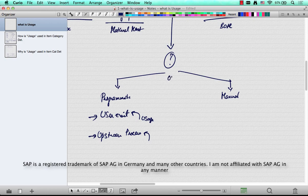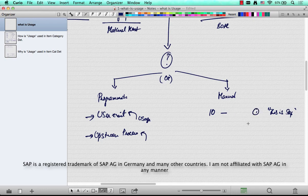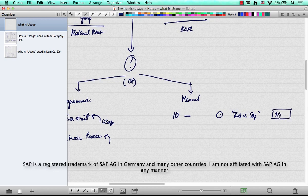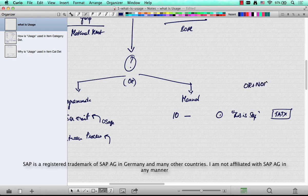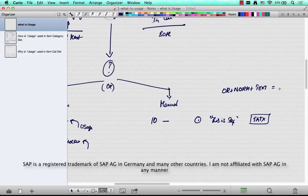Or you can use it manually. For example, if you create an order of type OR and then enter line item 10, don't enter the material, instead just give a description like 'this is an example' or whatever, and then give a quantity of one. Automatically, this item will be taken with an item category of TATX, which is because OR plus norm plus an item category usage of text will determine an item category of TATX.